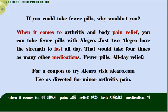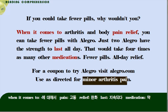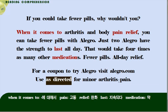'For a coupon to try Allegro, visit Allegro.com.' Allegro를 시험해 볼 수 있는 쿠폰을 얻기 위해서는 Allegro.com을 방문하시기 바랍니다. 'Use as directed for minor arthritis pain.' 'Minor' — 사소한이라고 하는 뜻이 있죠. 여기서는 '그리 심하지 않은', 이 말입니다. 그리 심하지 않은 관절염의 통증 완화를 위해서 지시된 바에 따라서 이용하도록 하십시오.